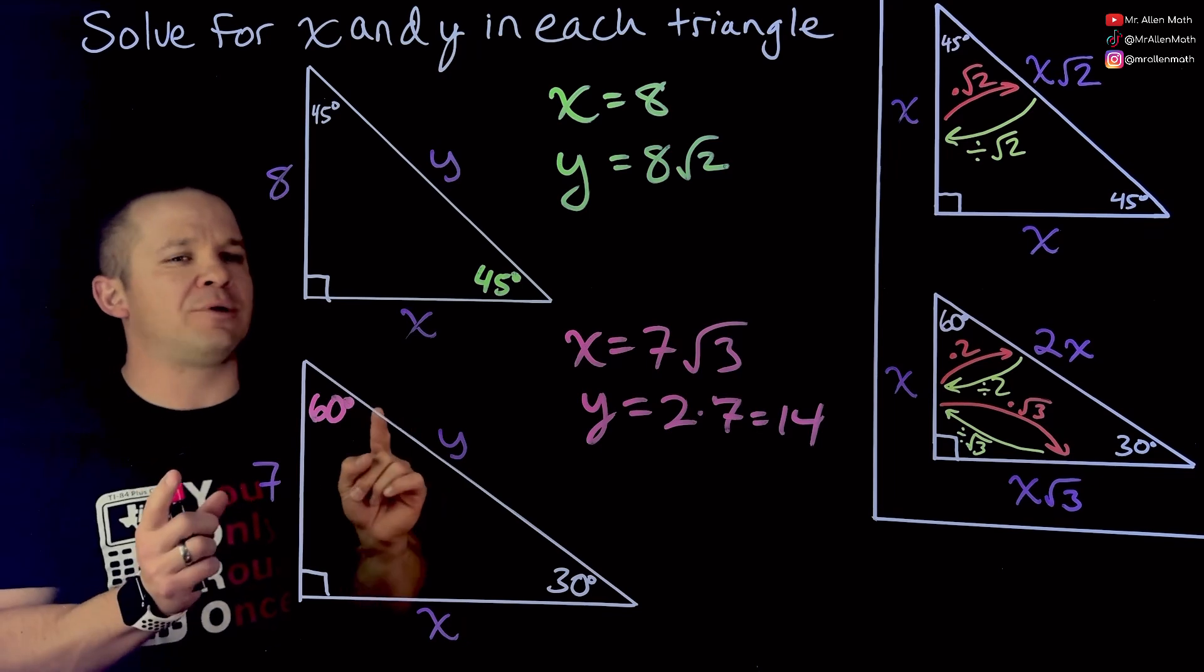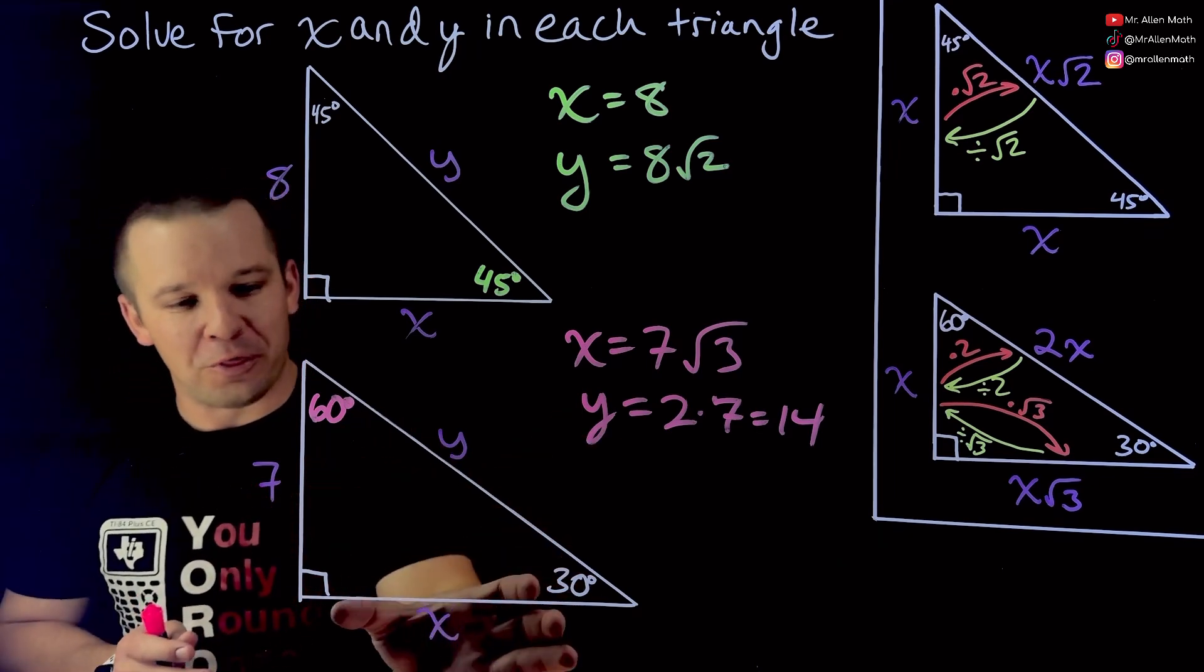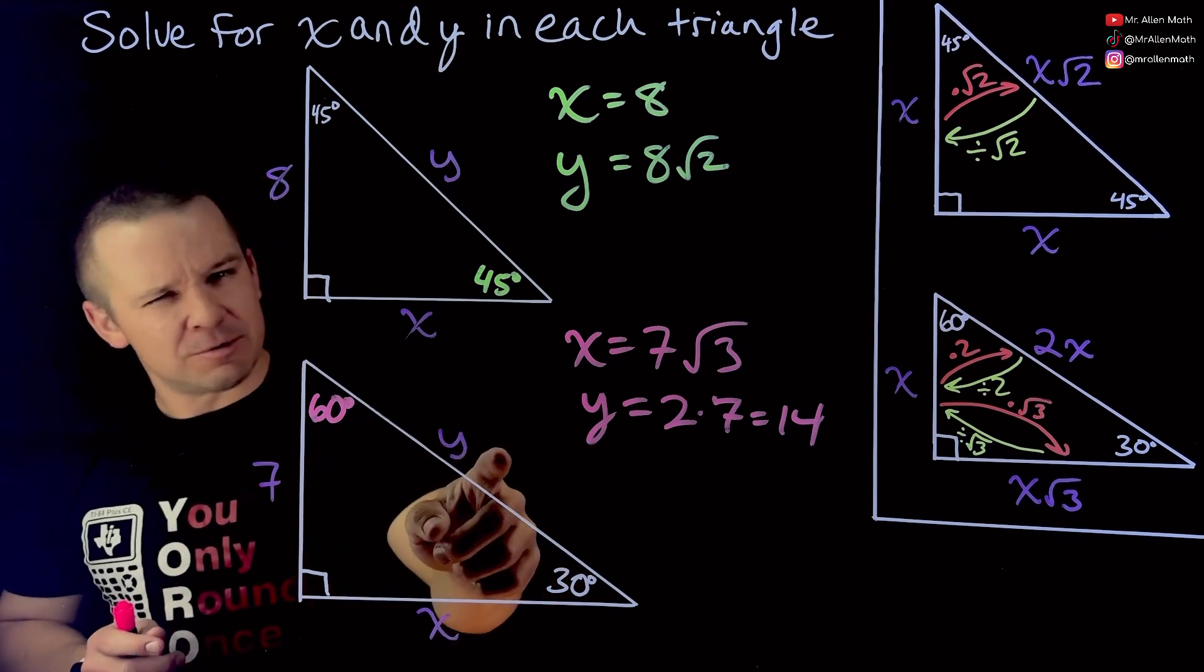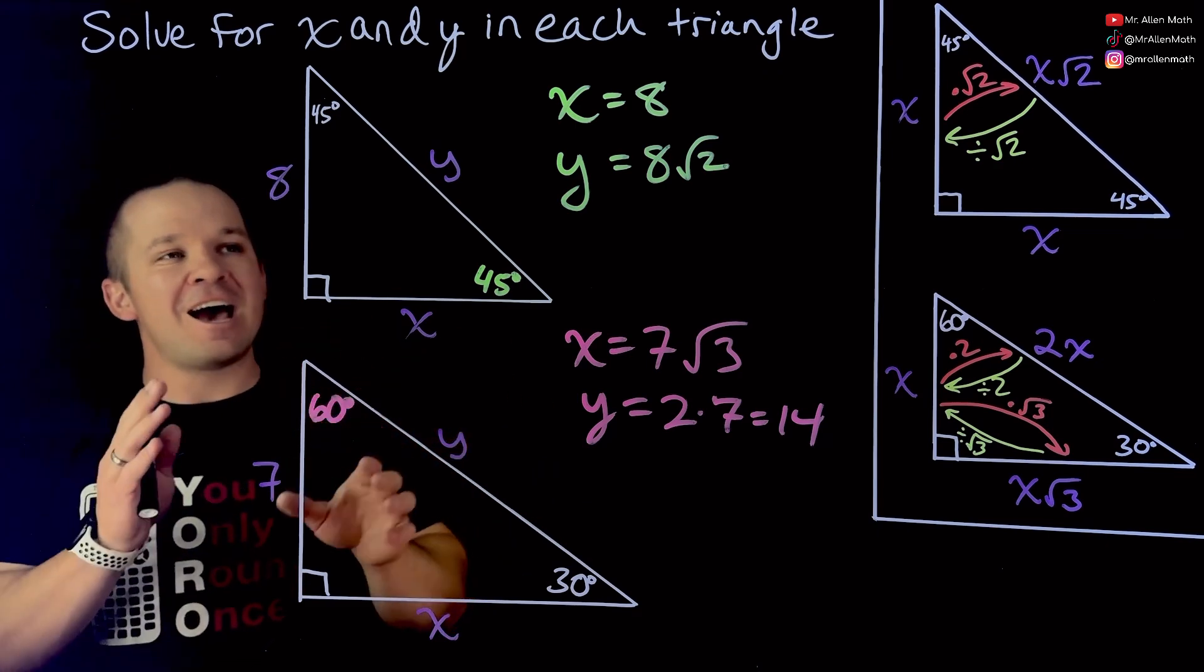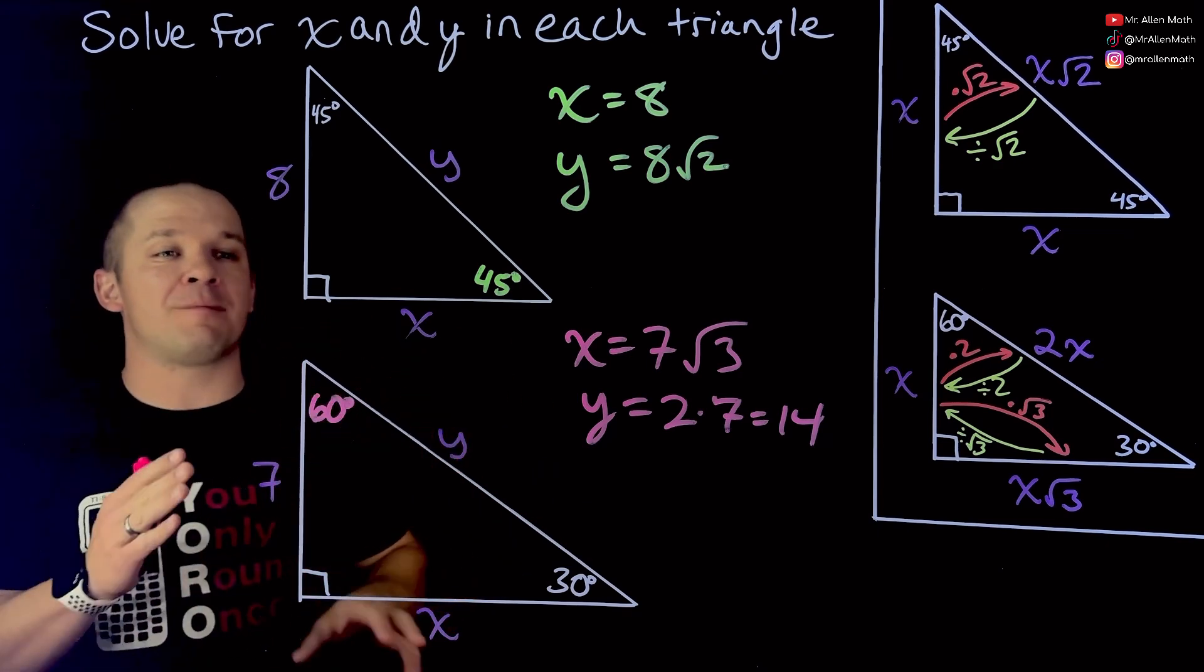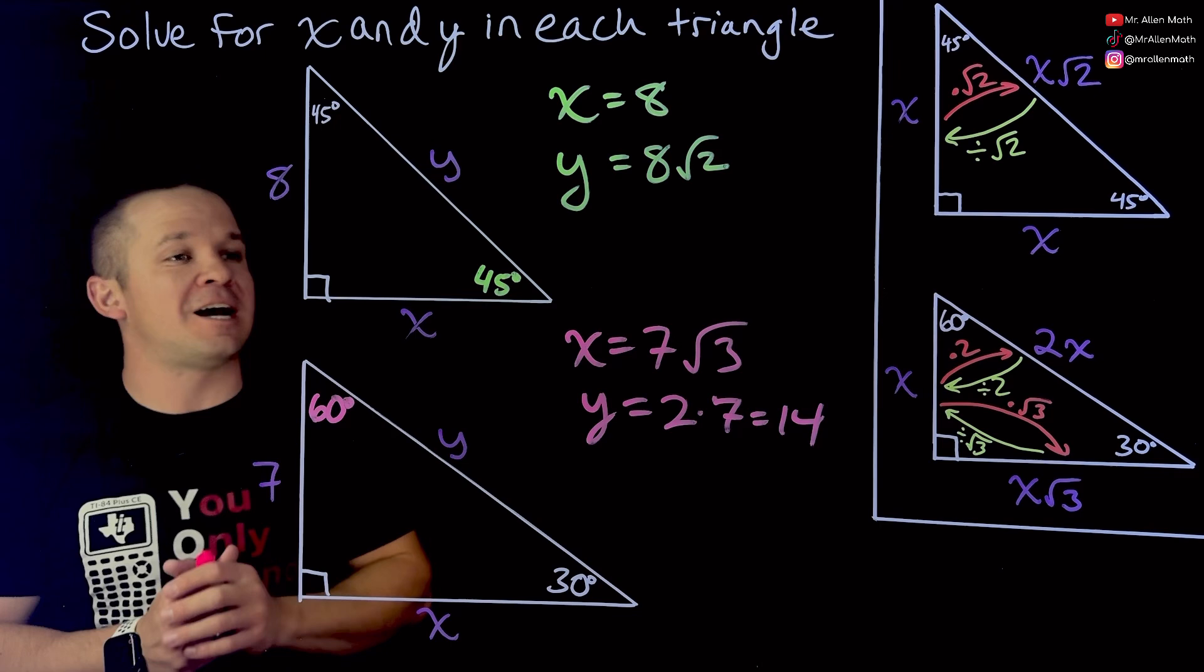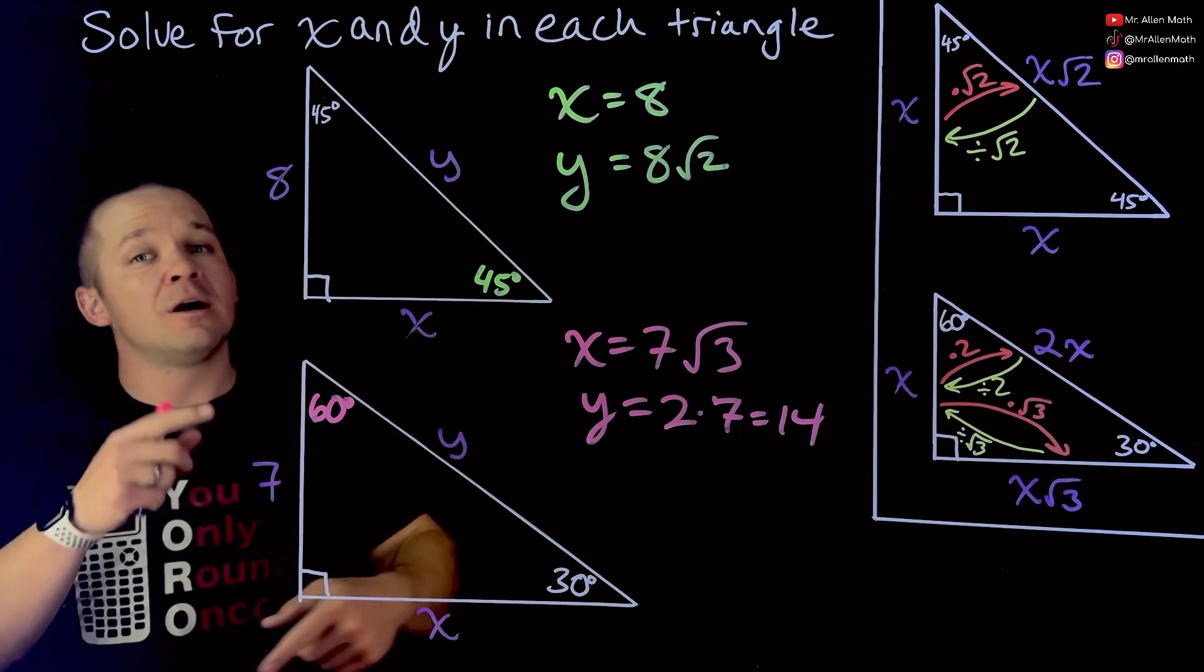Easy peasy on these two. Now the challenge starts to happen when we are given either this side right here. Anytime you have to deal with the whole radical and dividing by radical, it can get a little bit dicey. So let's try some of those examples here.